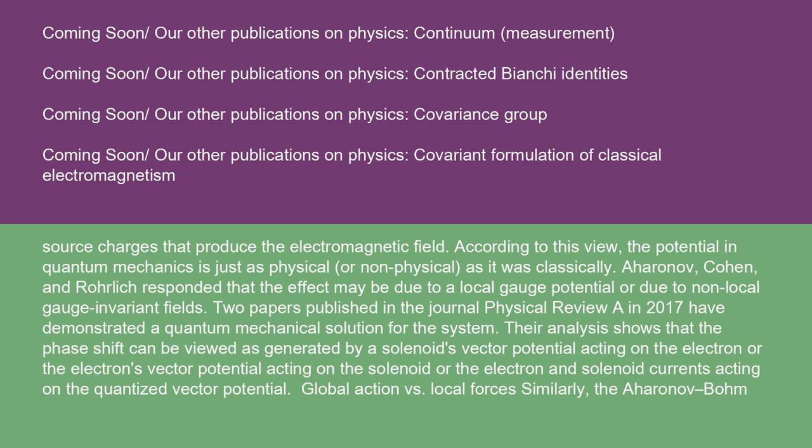Aharonov, Cohen, and Rohrlich responded that the effect may be due to a local gauge potential or due to non-local gauge invariant fields. Two papers published in the Journal Physical Review A in 2017 have demonstrated a quantum mechanical solution for the system. Their analysis shows that the phase shift can be viewed as generated by a solenoid's vector potential acting on the electron, or the electron's vector potential acting on the solenoid, or the electron and solenoid currents acting on the quantized vector potential.